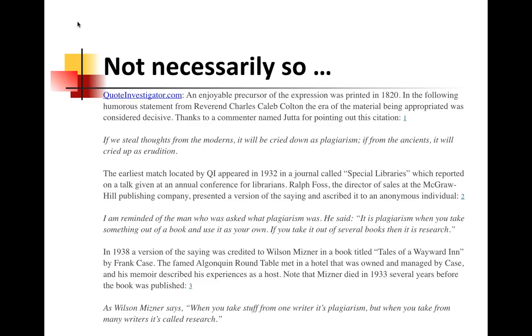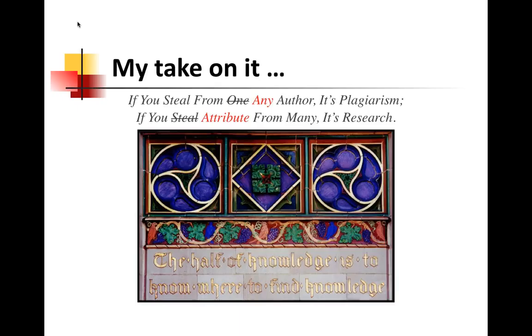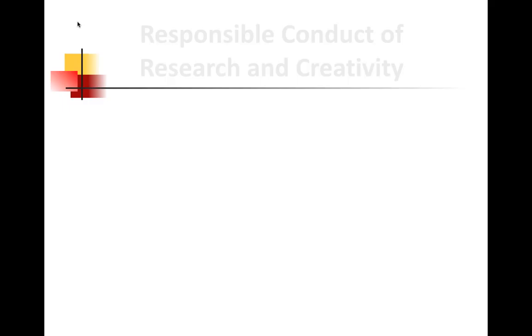I rewrote it this way: 'If you steal from any author, it's plagiarism. If you attribute from many, it's research.' And there's a saying on a stained glass window at Florida State University, over the entrance to the old library: 'The half of knowledge is to know where to find knowledge.' Even FSU doesn't know where that came from — they list it as anonymous in the campus guide, but I found references to it by Sir Francis Bacon, Dr. Samuel Johnson, and even the Latin entrance exam at King William's College. So as best we can, we try to give proper credit to where things came from. When I make a slide and put a quote in it, I want to have looked it up and know where it came from.